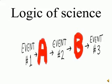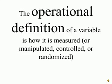So the logic of science must identify specific, measurable events and put them in some kind of causal sequence. In order to do this, we've got to look at each variable in terms of an operational definition. The operational definition of a variable is exactly how we're going to measure that variable, or manipulate it, control it, or randomize it.